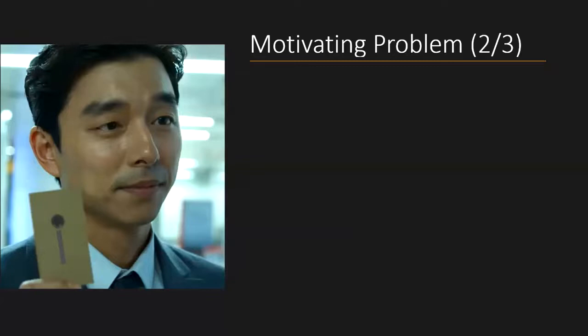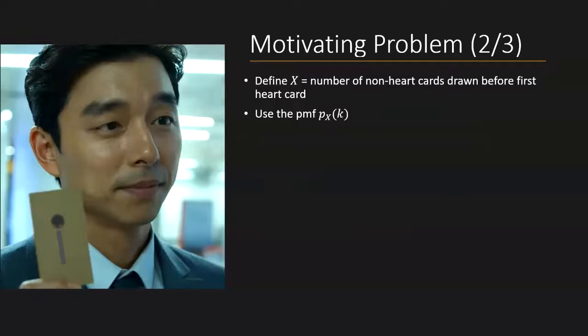Next, we'll go on to define a random variable. In this case, we'll have a random variable that describes the number of non-heart cards that are drawn before the first heart card. Why this variable? Well, because it immediately tells us the winning condition. And to describe this random variable, we'll use the probability mass function, as we described previously. And let's see how we can calculate the probability of winning.